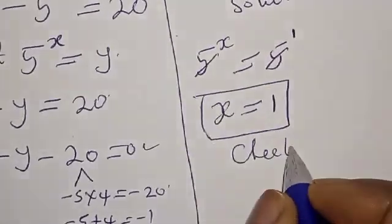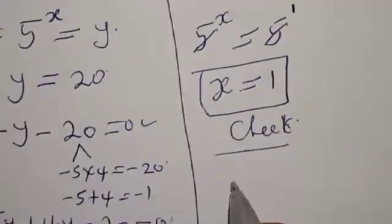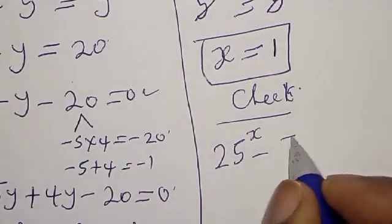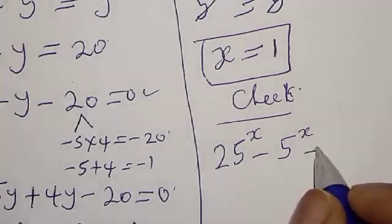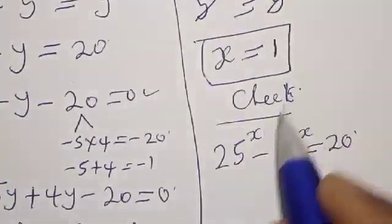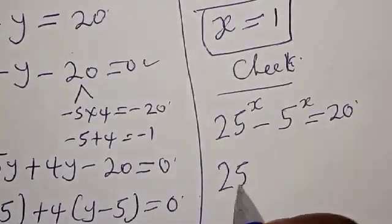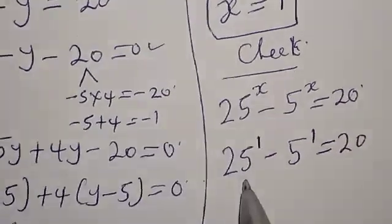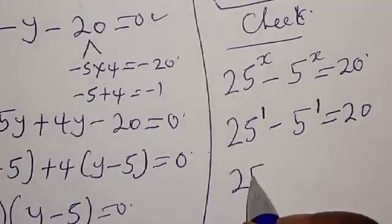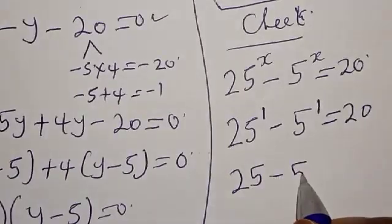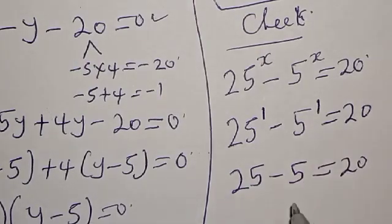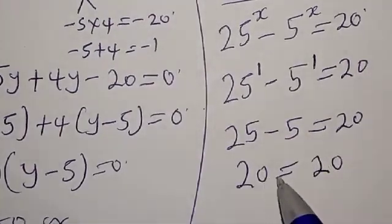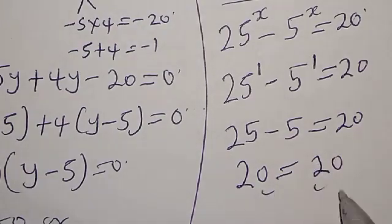Now let's check to confirm if our answer is correct. The given equation is 25 raised to power x minus 5 raised to power x equals 20. Substituting x equal to 1: 25 raised to power 1 minus 5 raised to power 1, which is 25 minus 5, and this equals 20. The left hand side equals the right hand side, which satisfies the given equation at x equal to 1.